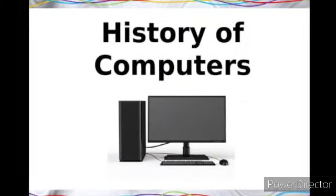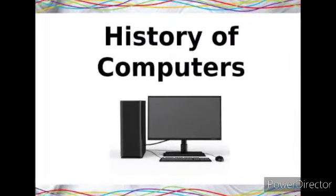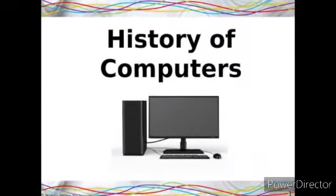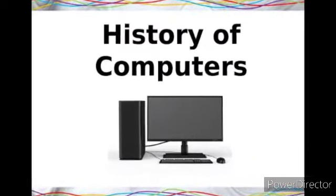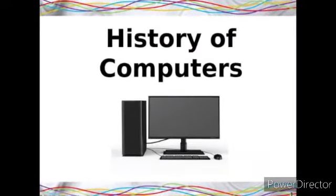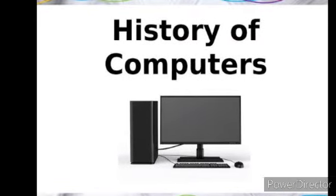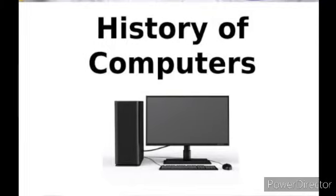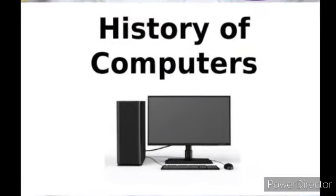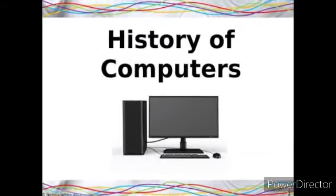The fourth generation of computers is from 1971 onwards. These computers are still in use and are being further developed. Microprocessor chips were developed during this stage. A microprocessor is a device that uses data in its digital form as input, processes it according to instructions already stored in it, and gives the result as output. 0s and 1s are coded to do mathematical operations — these are known as binary numbers.